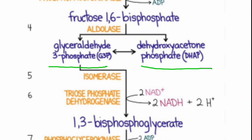Step 6 of the payoff phase: glyceraldehyde-3-phosphate is converted to 1,3-bisphosphoglycerate. This involves the addition of a phosphate group at the first position of the phosphoglycerate. The enzyme that catalyzes the reaction is glyceraldehyde-3-phosphate dehydrogenase, also called triose phosphate dehydrogenase. NAD+ is reduced to NADH, which is further utilized in the electron transport chain to produce more energy. This reaction also utilizes inorganic phosphate.